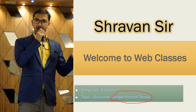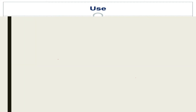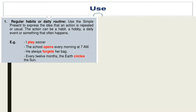Moving further, what we are going to understand today? First of all, how do we use it? We need to understand what are the uses of simple present tense. The first use is regular habits or daily routine. We use simple present tense for regular habits and daily routine. If you are doing something regularly, if you are having a regular routine or a particular habit, then what do we use to express that repeated or usual idea — whether it is a habit, hobby, or a daily event — it is simple present tense.